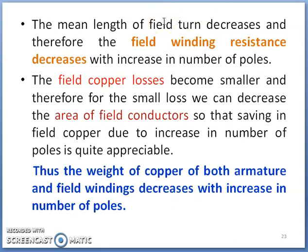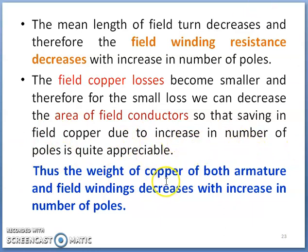What happens to field winding resistance and field copper loss? As the mean length of the field turn decreases due to a large number of poles, the field winding resistance decreases with increase in number of poles. At the same time, field copper loss becomes smaller. If losses are small, definitely the area of field conductors required will be less because field copper loss will be less due to increase in number of poles. Thus, the weight of copper of both armature and field winding decreases with increase in number of poles — the requirement of copper will be less for both armature and field sections.